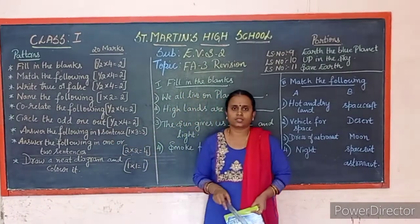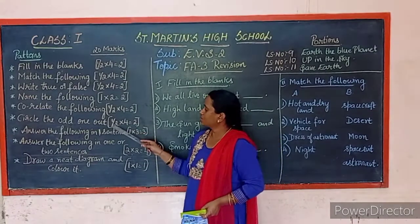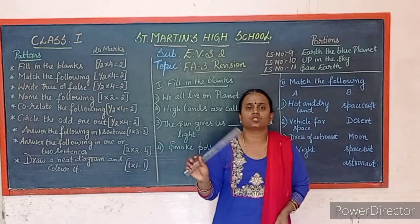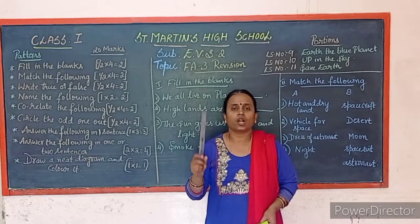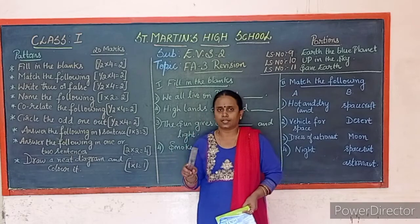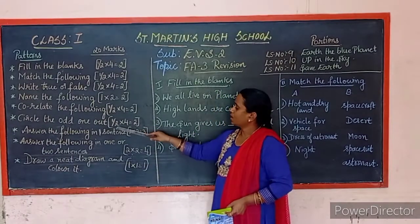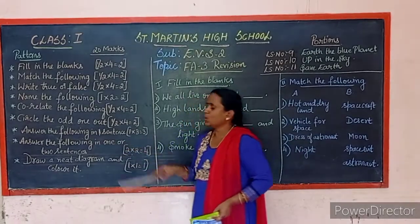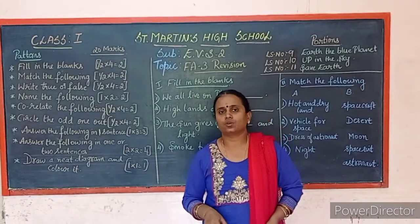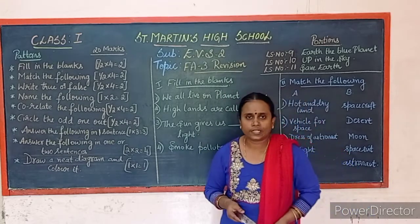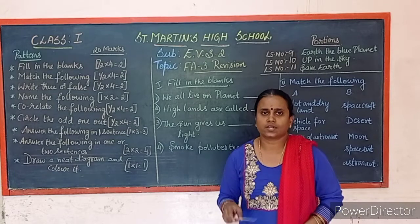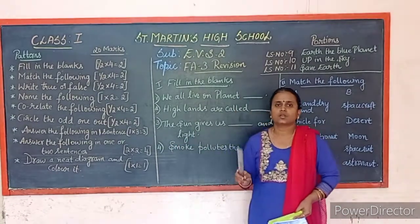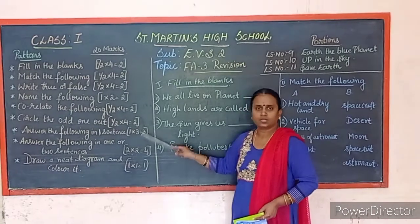Circle the odd one out: you will have 4 options per question and you have to circle the one that does not belong to the group. There are 4 questions, each carrying 1 mark, total 2 marks. Answer the following in one sentence: there will be 3 questions, each carrying 1 mark, total 3 marks.